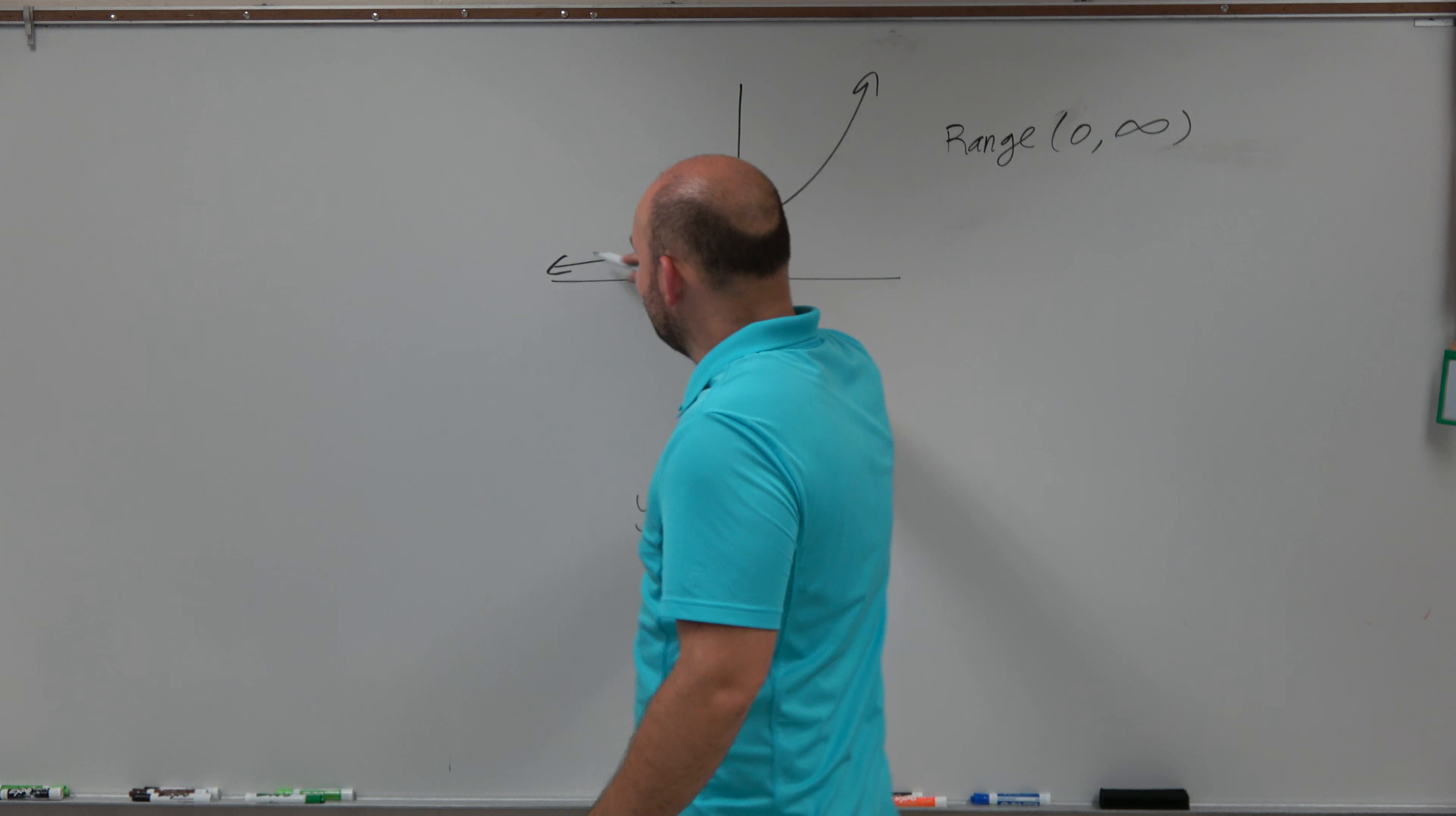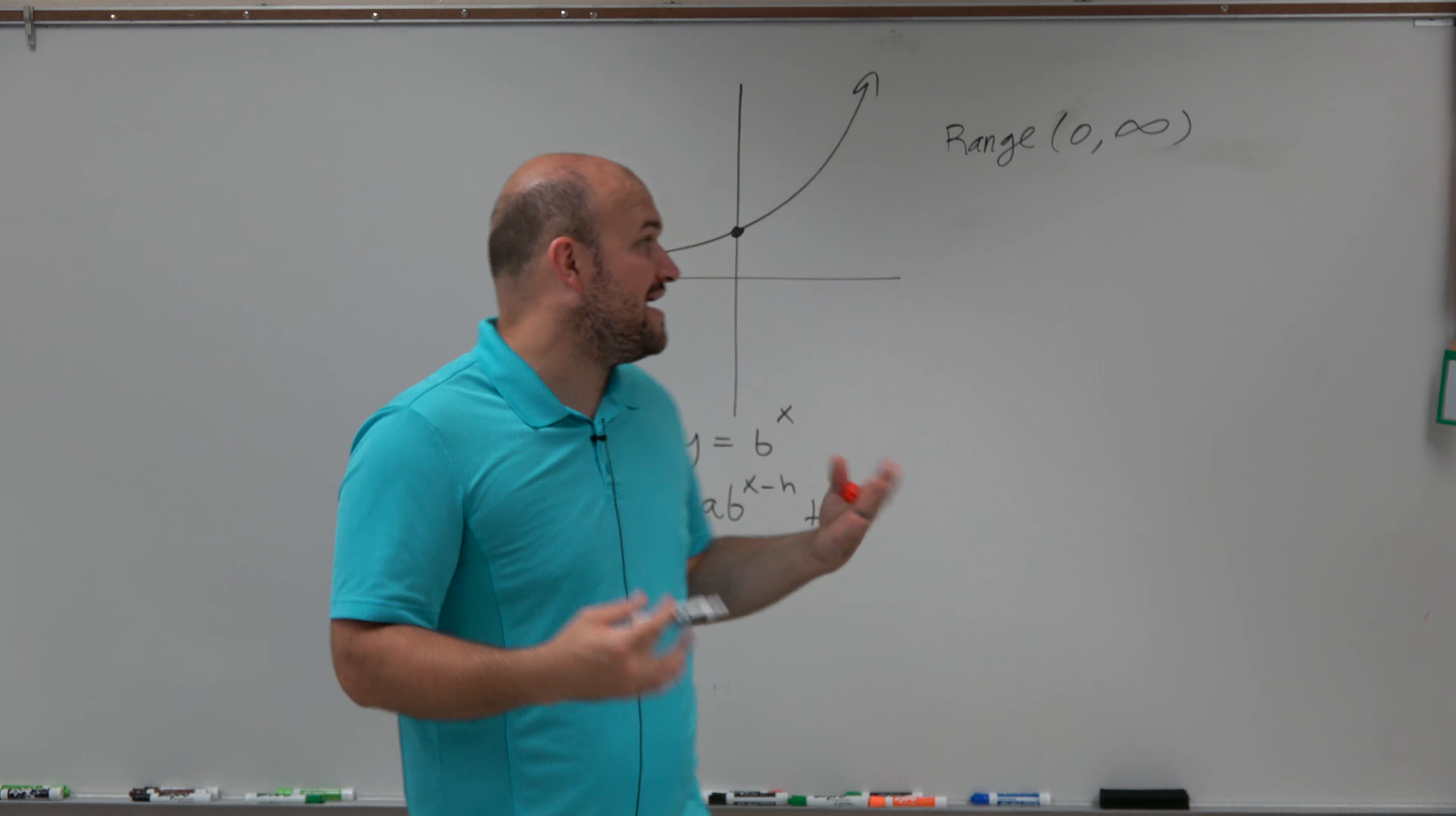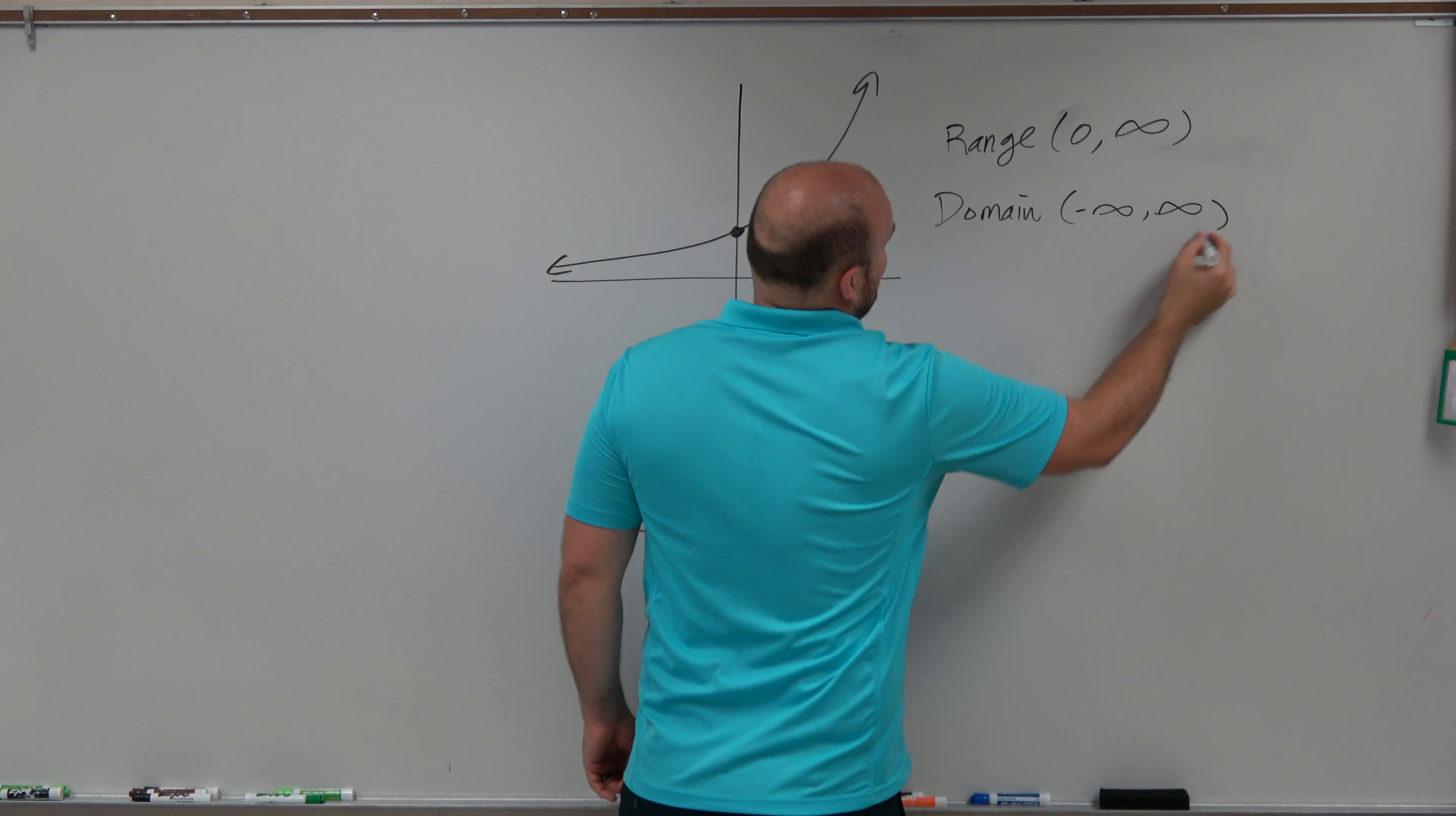Basically, that means this graph is going to continue going to the left, and this graph is going to continue going to the right. It doesn't really matter what value of x is. The domain is going to be from negative infinity to infinity.